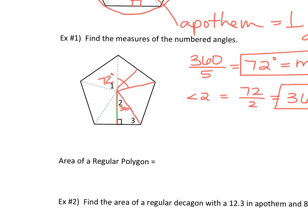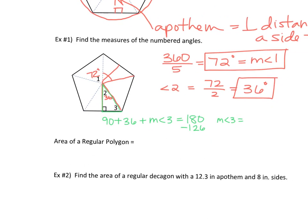Right. So you have a triangle here now. That means that 90 plus 36 plus the measure of angle three has to equal 180 degrees. So if I take away the 90 and 36 or take away the 126, that would make the measure of angle three 54 degrees. Does that make sense?